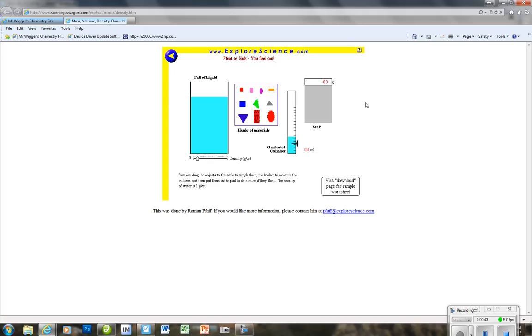First of all, I'm going to just do a couple for you so you can see and get the feel for how this actually works. I'm going to take this red square and put it over here on the scale. You'll see right here that we have a mass of that little red square of 19.5.